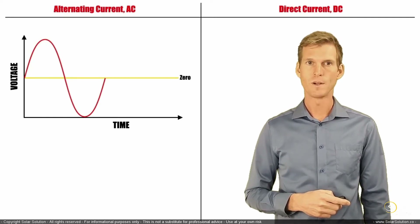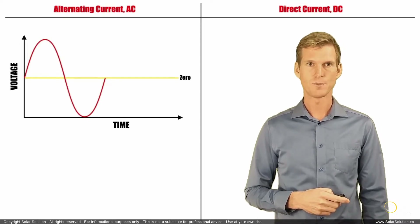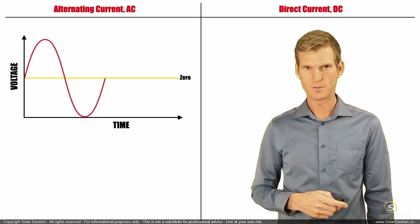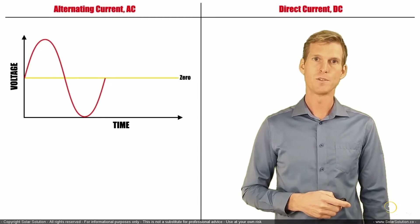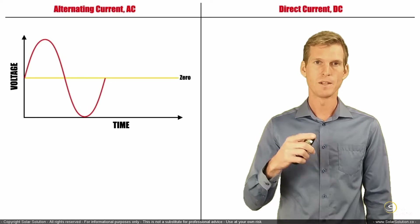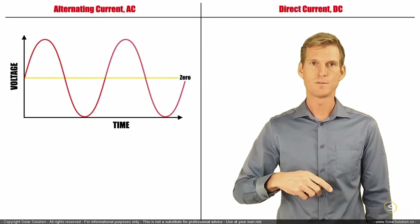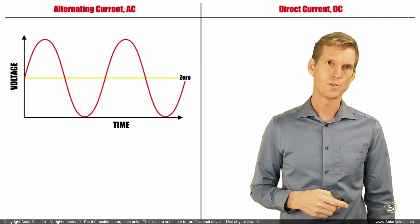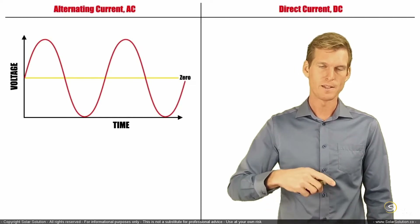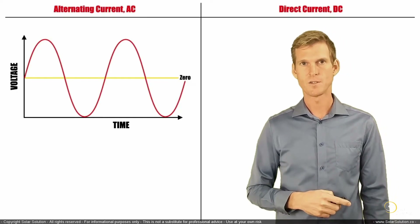It becomes more and more negative, reaches a peak negative voltage, then starts to climb up again towards the zero line. When it hits the zero line it starts to do exactly the same as before, following the same pattern. This is what we refer to as alternating current, and this wave is an alternating current sinusoidal waveform.